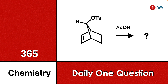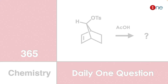Welcome to One Chemistry, this is the 365 Chemistry Series — one daily question for you. A bridged compound is given; you have to solve it. It contains an alkene and you are using acidic conditions with OTs. You have to find what the final product will be.